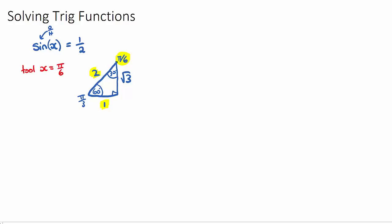Now, I call it a tool angle, because often our question has a given domain, a domain where we need to solve our function for x, and an example would be 0 to x to 2π, and this means that we're going to have multiple answers within our given domain.